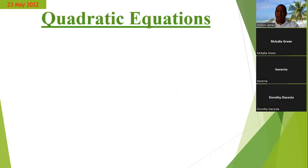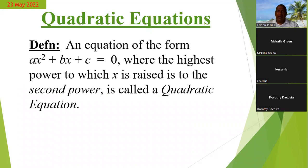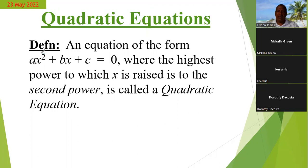Now let us look at the definition. An equation of the form ax² + bx + c = 0, where the highest power to which x is raised is to the second power, is called a quadratic equation. The important thing that really makes a quadratic is the power of x, so the highest power in every quadratic will be to the power of two.